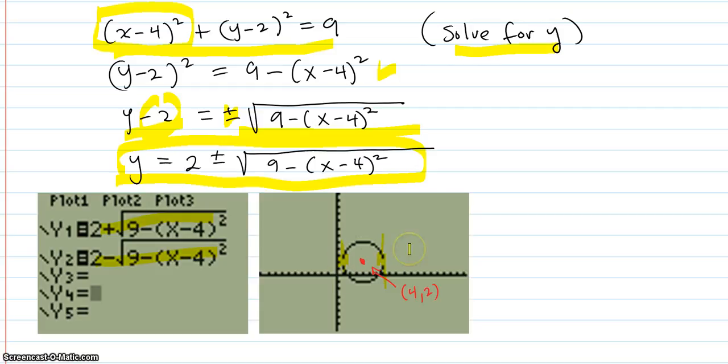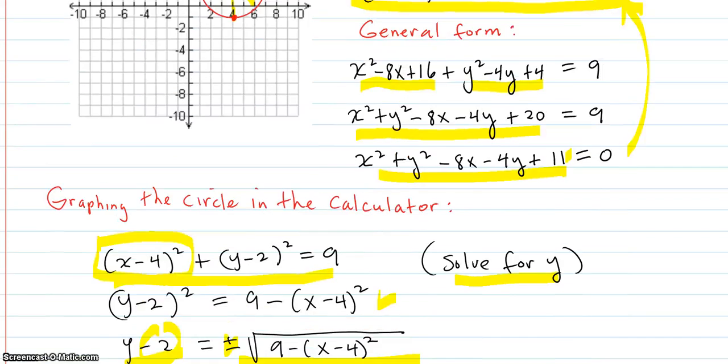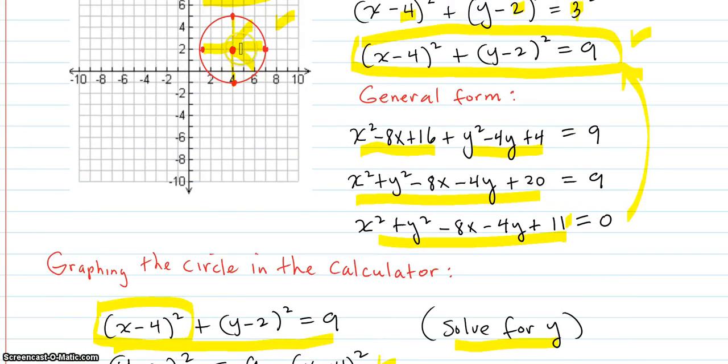There's other ways to graph a circle that you'll learn about later in math. Anyway, so is this the right one? Well, it has (4, 2) as the center, and it looks like it goes up 3 to the (4, 5) and down to the (4, -1). So yeah, this is the right circle, the same circle as this one up here.